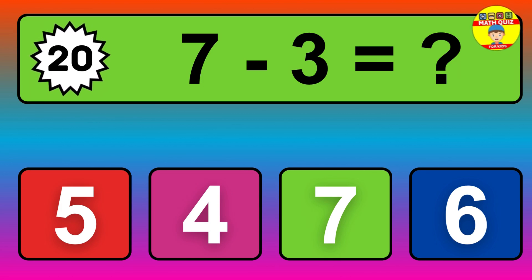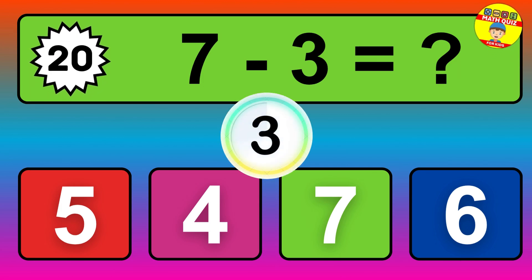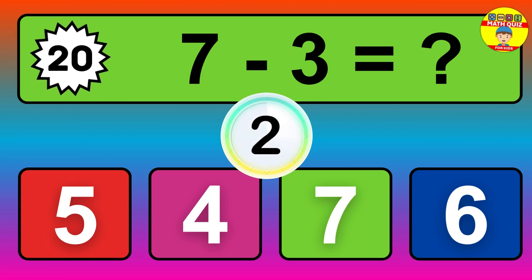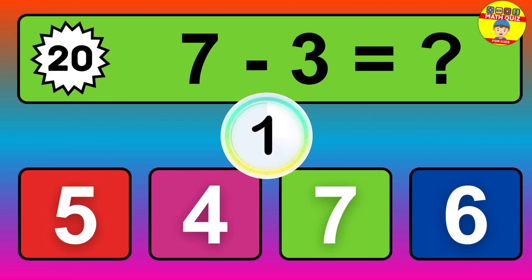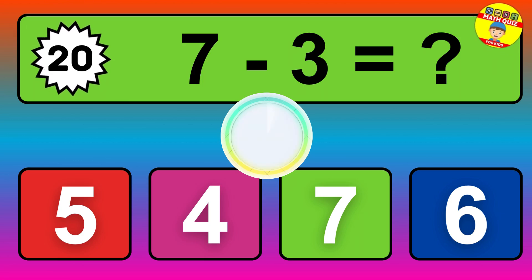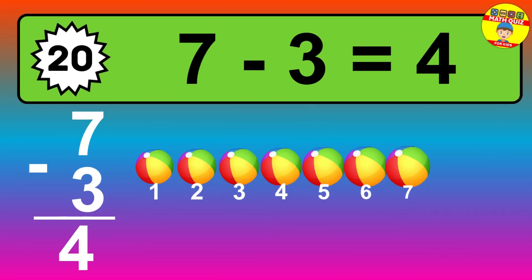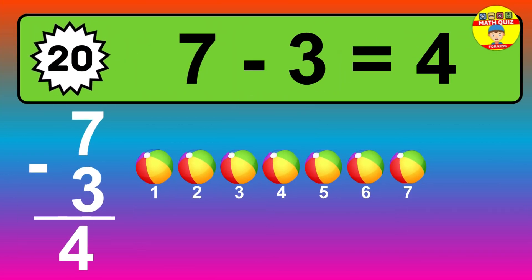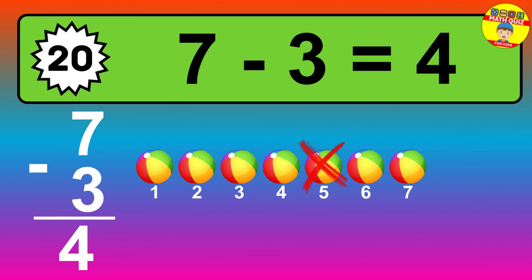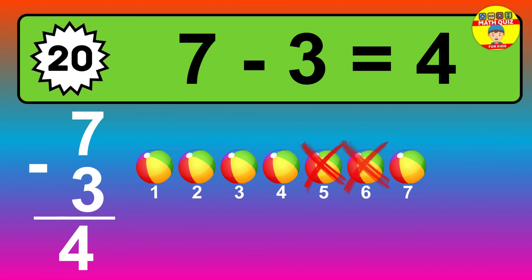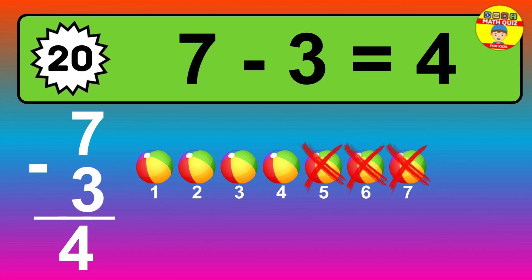Question twenty: seven minus three equals what? So the answer is seven minus three is four. Let's count it: one, two, three, four.